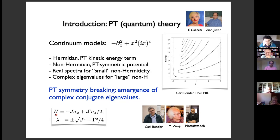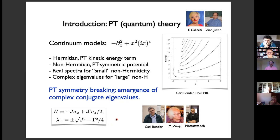For this two-by-two matrix, the eigenvalues are given by ±√(j² − γ²/4). You will have real eigenvalues when non-Hermiticity γ is small, and complex conjugate eigenvalues when γ is large. At γ = 2j, the eigenvalues become degenerate — that is called an exceptional point. This is a generic feature of PT systems: you also get a set of eigenvectors which are parallel to each other at the exceptional point.